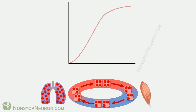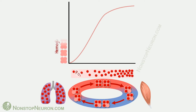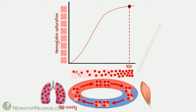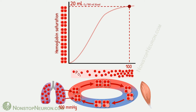Let's quickly revise what we have seen in the video on basic understanding of the oxygen hemoglobin dissociation curve. In this graph, the x-axis shows partial pressure of oxygen, and the y-axis shows saturation of hemoglobin. The oxygen hemoglobin dissociation curve is S-shaped or sigmoidal. At the lungs, partial pressure of oxygen is about 100 mmHg. Due to this high partial pressure, oxygen binds with hemoglobin and saturation increases.